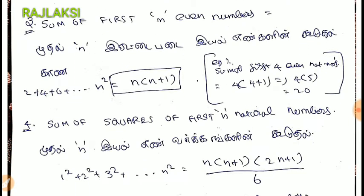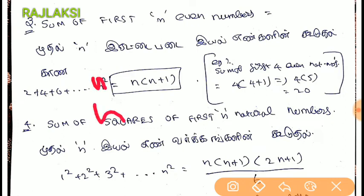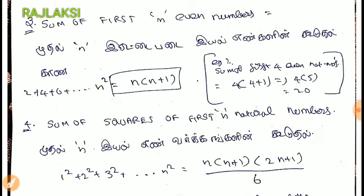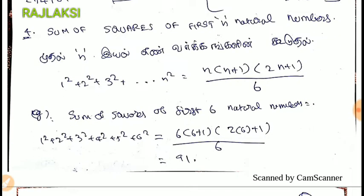In the first even numbers — 2, 4, 6 — this is N square, N into N plus 1. The sum of squares of the first N natural numbers: if you have a number of squares, you can use the formula N into N plus 1 into 2N plus 1 divided by 6.